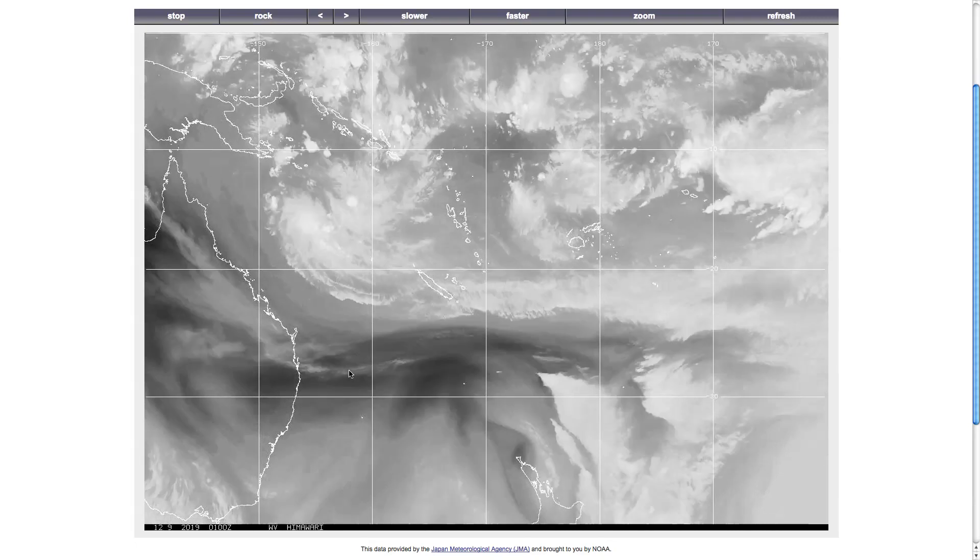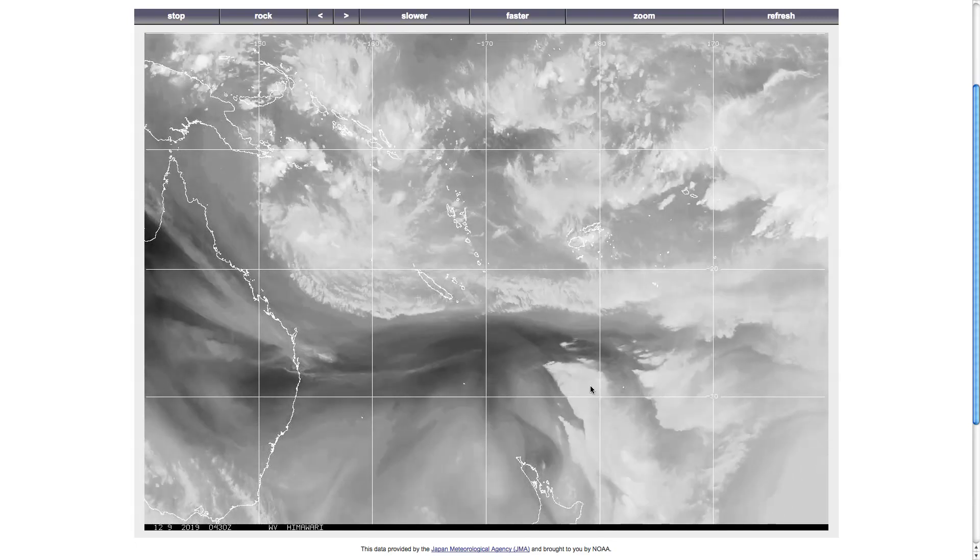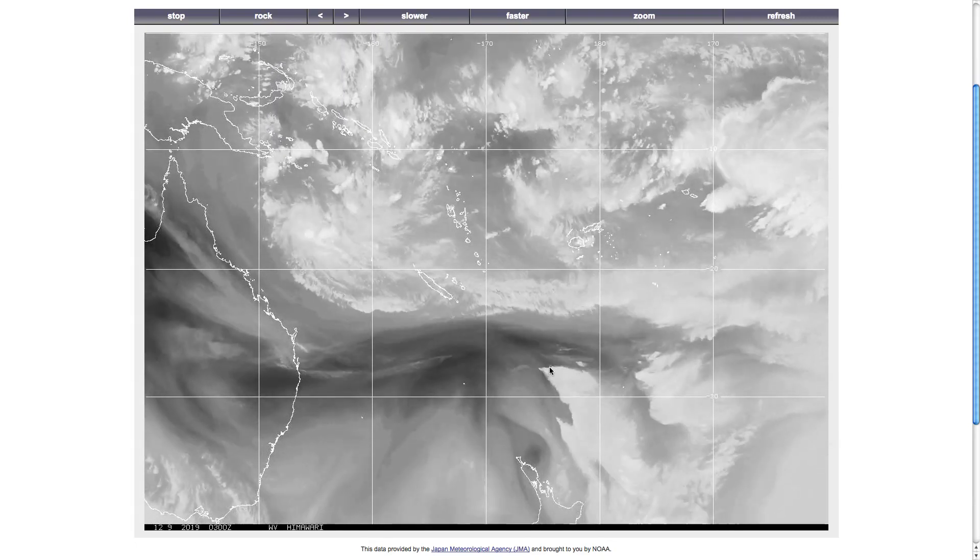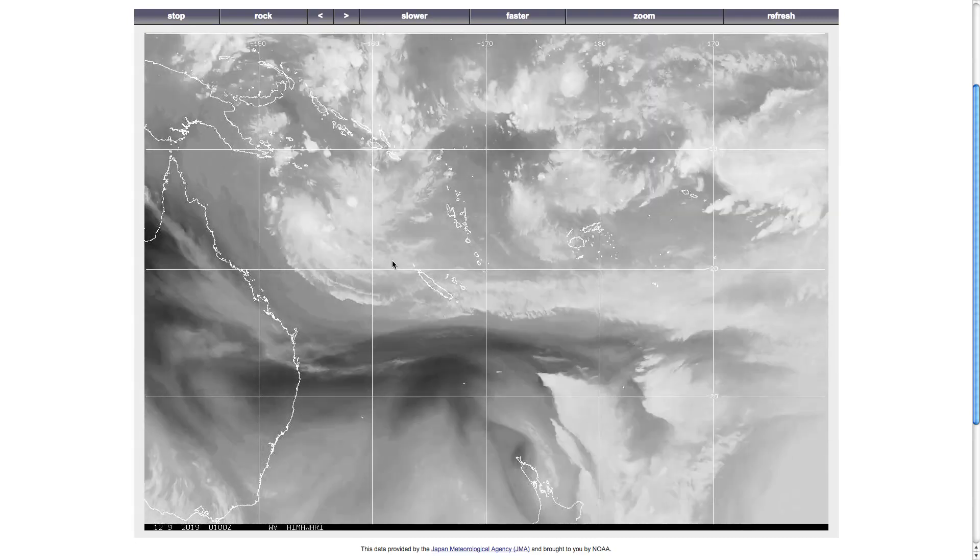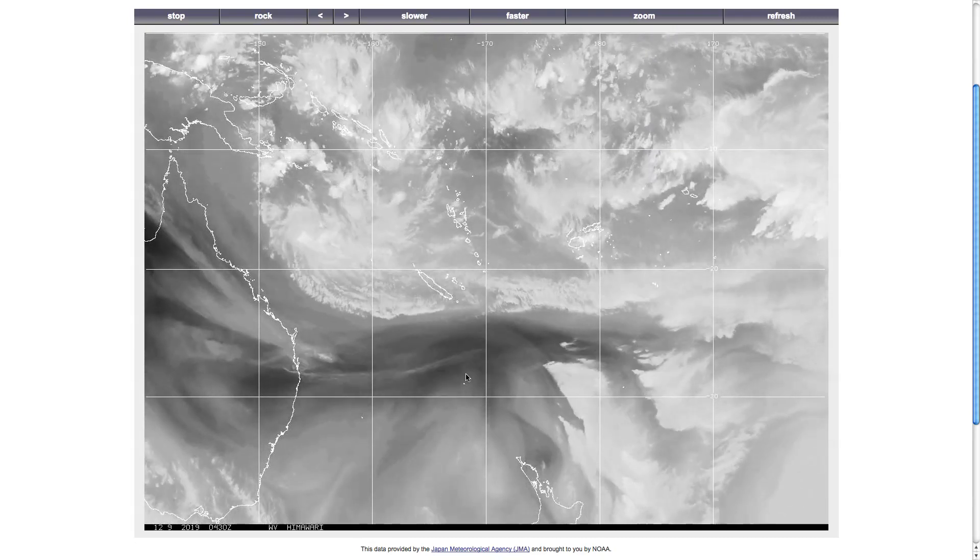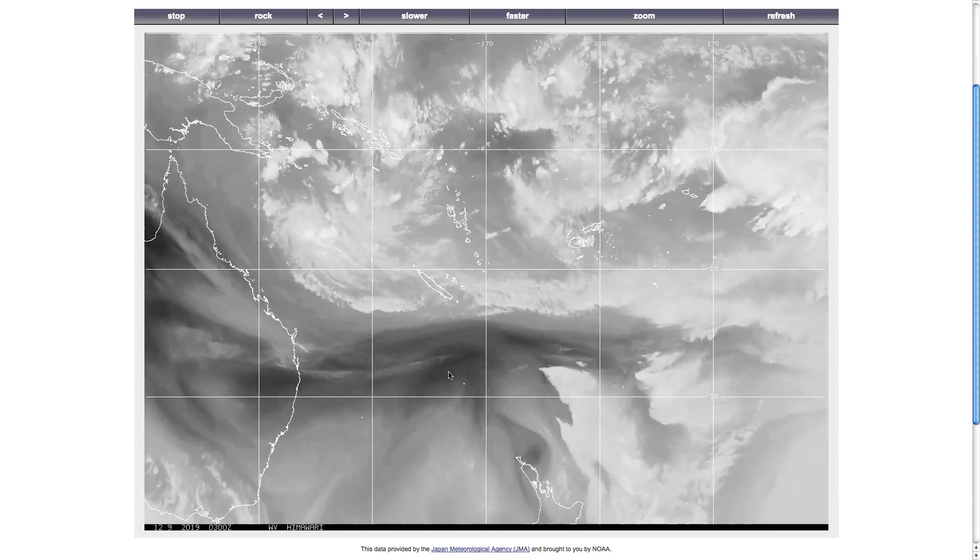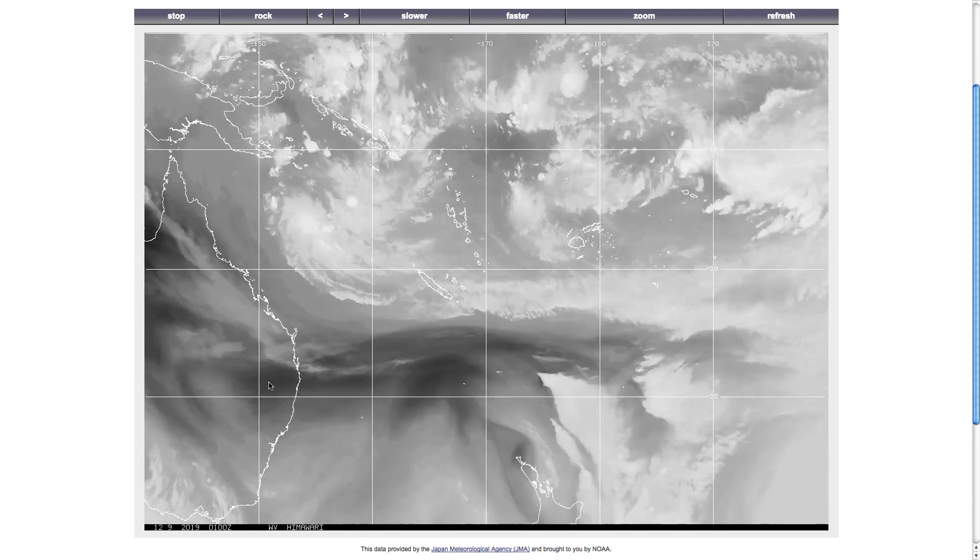So if you can see something really bright, that means the top of the water vapor is quite high, so these storms coming out here. But where it's dark, you can see deeper into the atmosphere, so the upper part of the atmosphere is really dry in the dark areas.